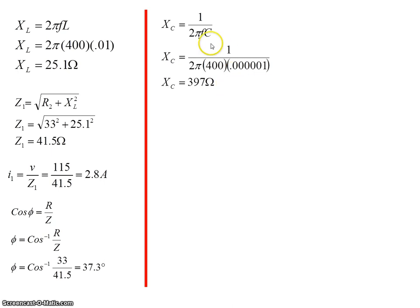In the capacitive branch, well the capacitive reactance is 1 over 2πfC. So if I put the values in for 1 microfarad, I get that the capacitive reactance is 397 ohms. The current then in that branch of the circuit is 115 volts over the 397, which gives me 0.28 of an amp.